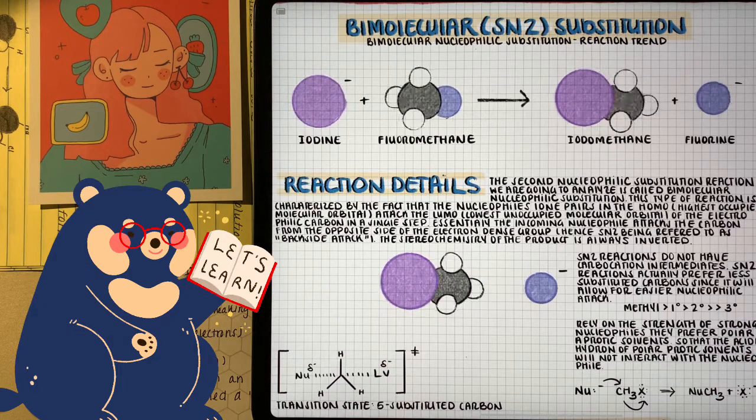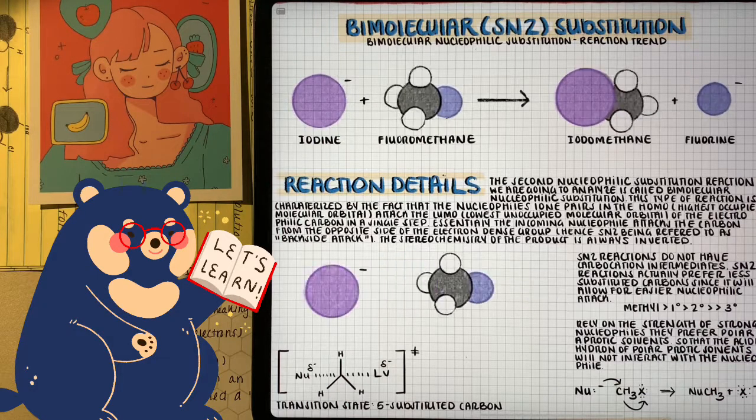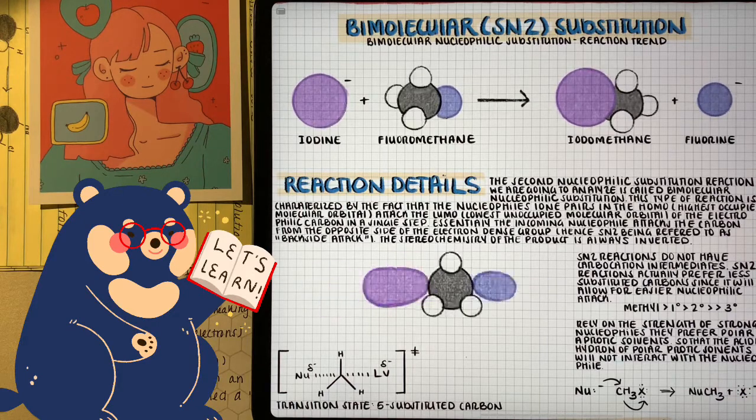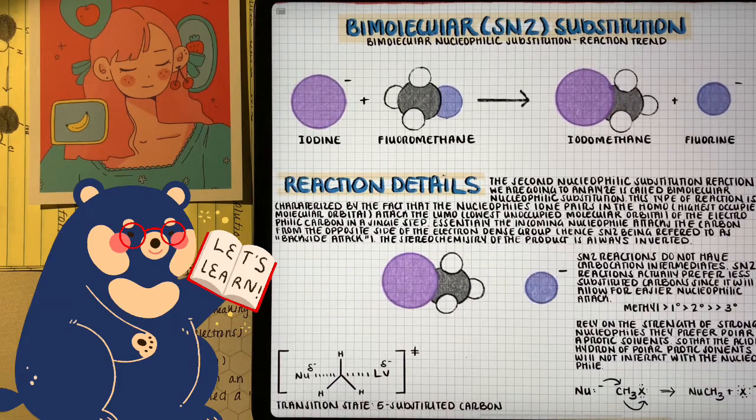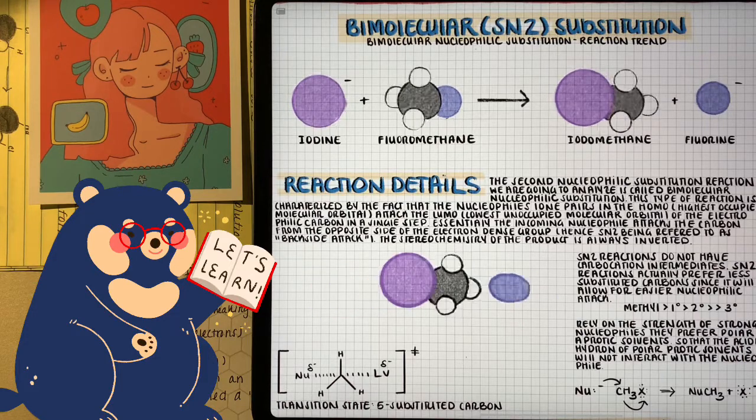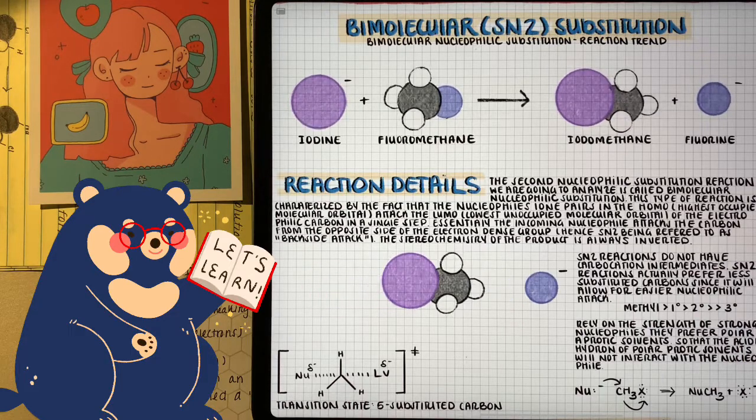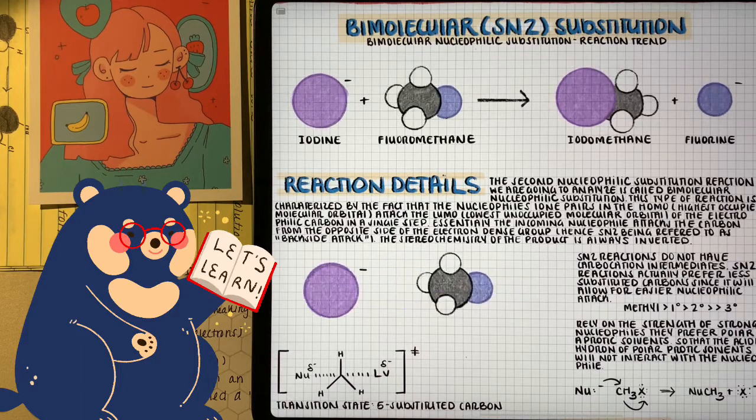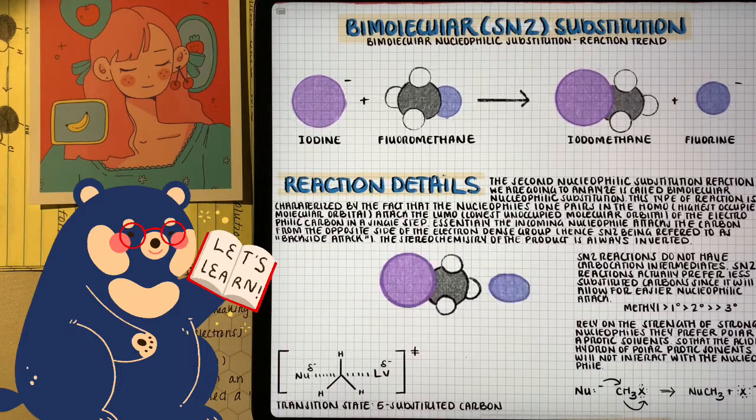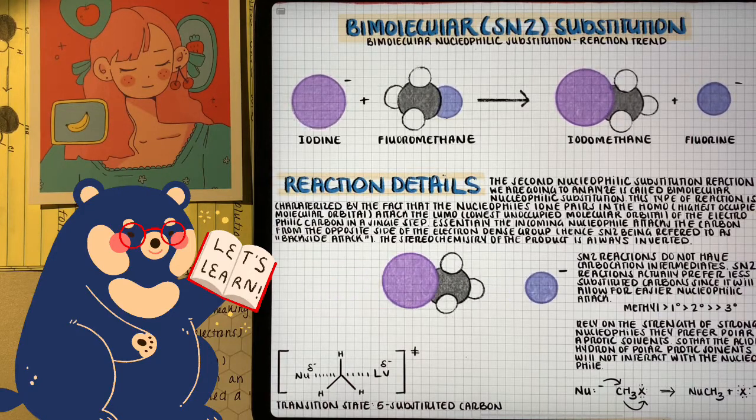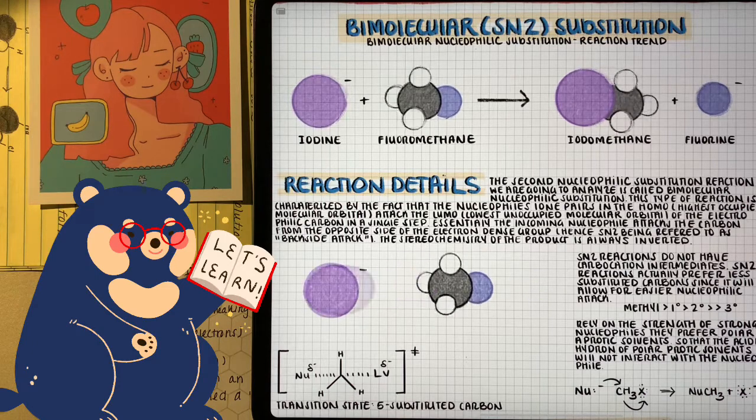The reaction rate of SN2 reactions are dependent on both the electrophile and the nucleophile versus SN1 was just dependent on the electrophile because that's where the leaving group left. SN2 reactions favor polar aprotic solvents without an acidic hydrogen because if we had polar protic solvents, then that would affect our nucleophile because it's going to have interactions with the solvent, which is going to affect our rate now that our rate constant includes the nucleophile.